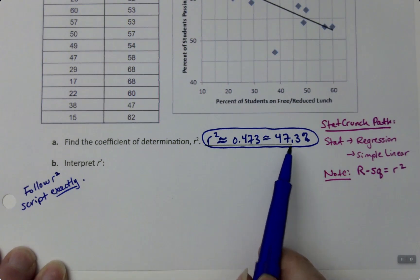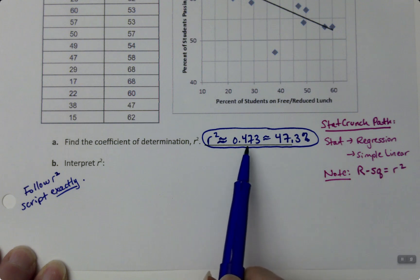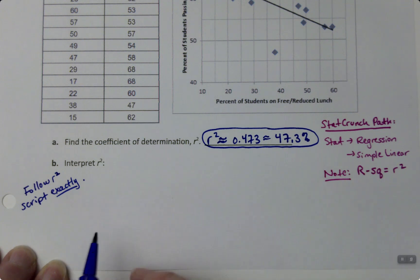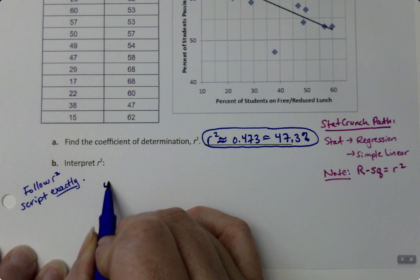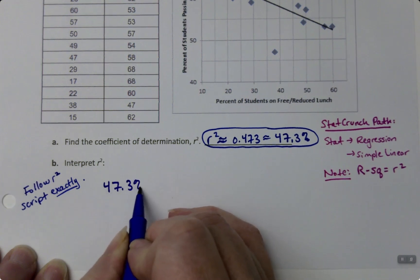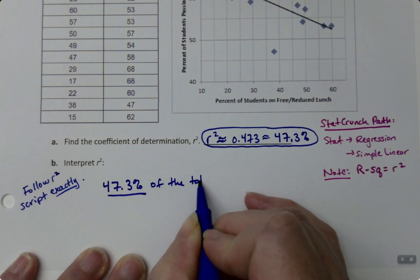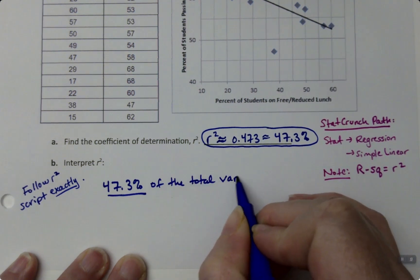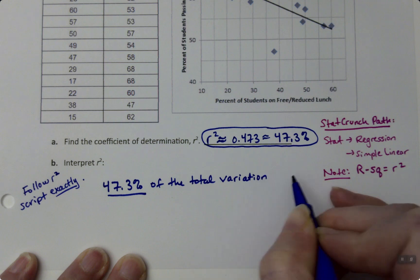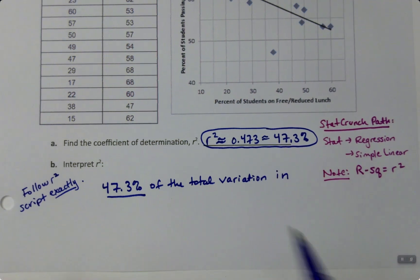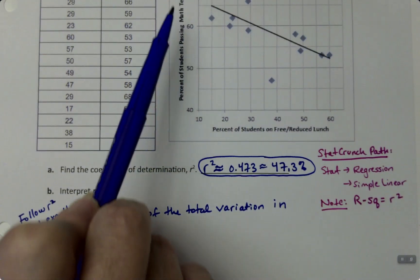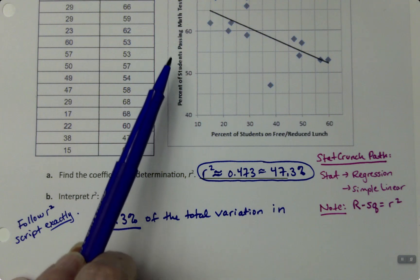The first thing we're going to do is write it as a percentage. We don't use the decimal version; we use the percentage version. So we'll say 47.3% of the total variation...